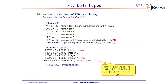For the fractional part, we multiply repeatedly and arrange the digits obtained before the decimal point in the same order they were obtained. So 41.6875 has an equivalent binary representation of 101001.1011 base 2.